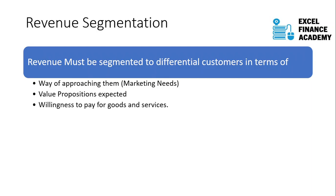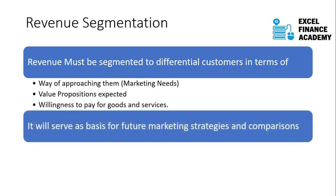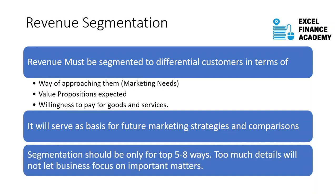It depends on the customer's willingness to pay for goods and services — that's one of the three criteria for segmentation. You don't need to create 20 segments just because you have 20 types of customers. You need to consolidate them to a maximum of five to ten segments. More than that means too many marketing focuses and value propositions, which is not practical for your team to manage effectively.